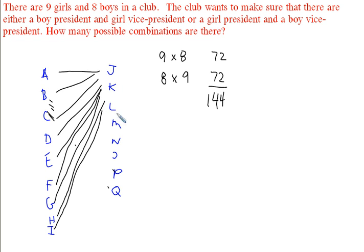That's the number of possibilities for a girl president with a boy vice president, or a boy president with a girl vice president — all worked out by drawing a diagram. That makes logical sense.